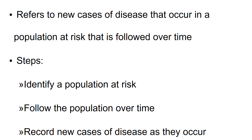What is incidence then? It refers to new cases. In the previous example, we did not ask how many of you have recently started wearing spectacles — we just wanted to know what proportion of the people were wearing spectacles at that particular point in time. But for incidence, we refer to new cases of disease that occur in a population at risk that is followed over time. The steps: we have to identify a population at risk — those who do not have the disease of interest — follow them over a period of time to see how many developed the disease, and record new cases as they occur.